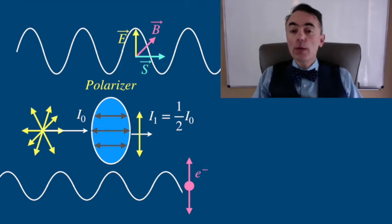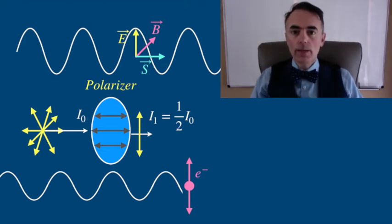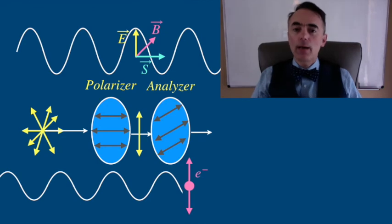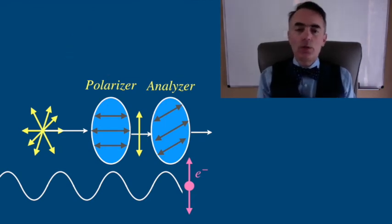If you use two polarizers, you can call the first one the polarizer because it selects one particular polarization of the incoming light and the second one you can call it the analyzer because you can use it to analyze some properties of light.